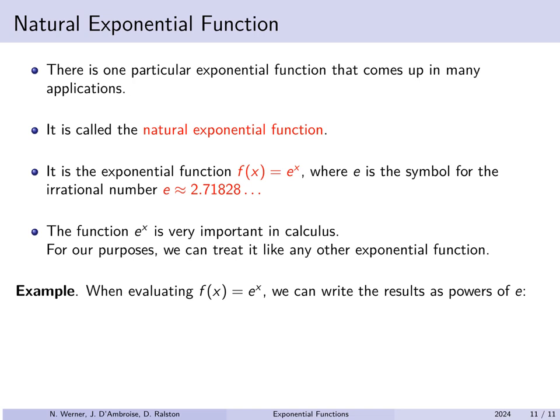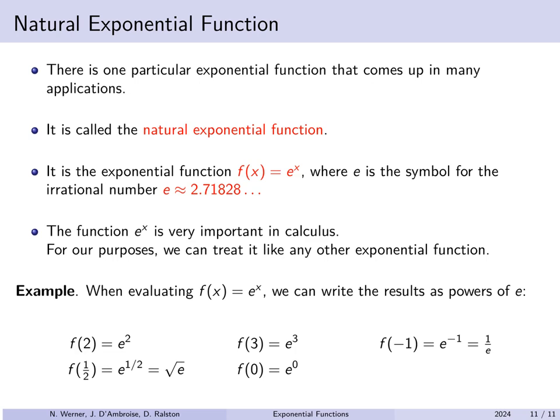When evaluating f of x equals e to the x, we just write results as powers of e. e is an irrational number whose decimal expansion goes on forever with no pattern. So f of 2 equals e squared — you can use a calculator for a decimal, but in a math course you leave it as e squared. Similarly f of 3 equals e cubed, f of negative 1 equals e to the minus 1, which we'd usually write as 1 over e. f of 1 half equals e to the 1 half, which is the square root of e. f of 0 equals e to the 0, which simplifies to 1.